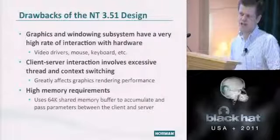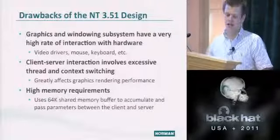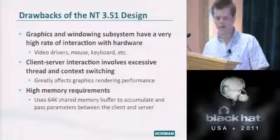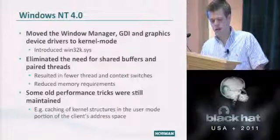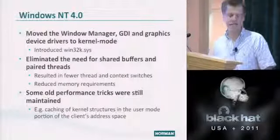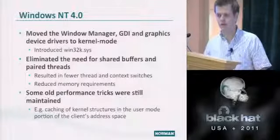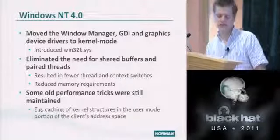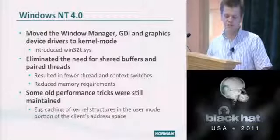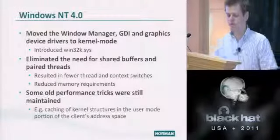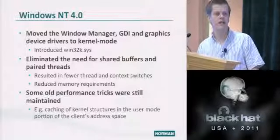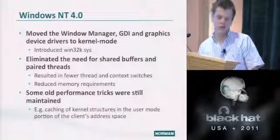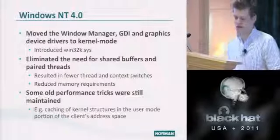In Windows NT 4.0, they moved most of these components to kernel mode, eliminating the need for shared buffers and paired threads, reducing threading context switches and memory requirements. However, they still use some performance tricks such as caching or mapping kernel mode structures into user mode — which is good for performance but really beneficial for exploitation.